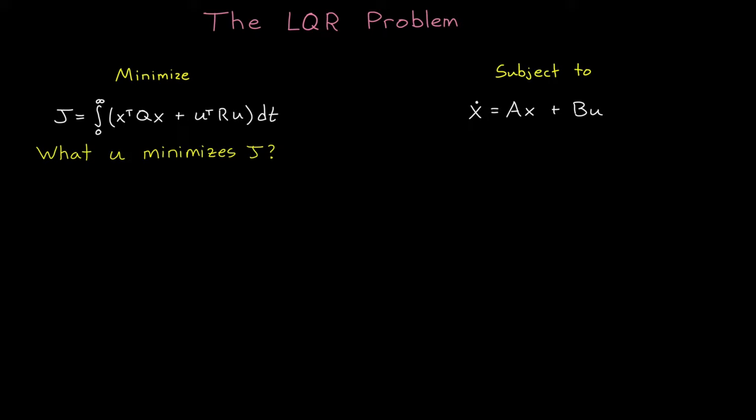And this is where our first clever manipulation comes in. We're going to introduce a matrix P, which is symmetric, so P equals P transpose. And we don't know what this matrix is, but we are going to find out later. For now, let's just add it into our cost function with x naught transpose times P times x naught, where x naught is the initial state of the system.